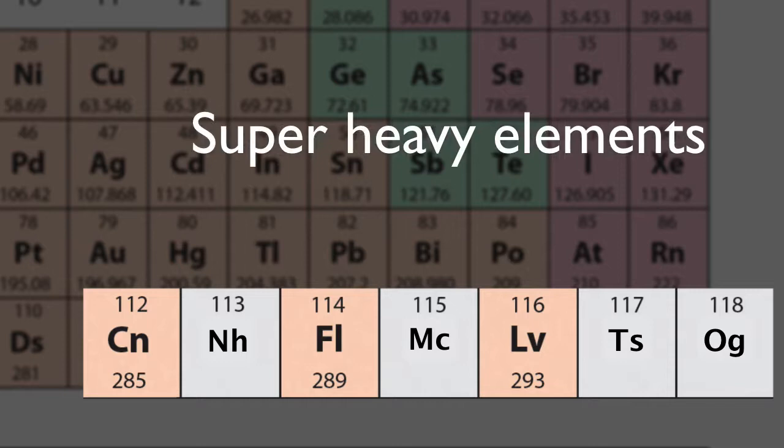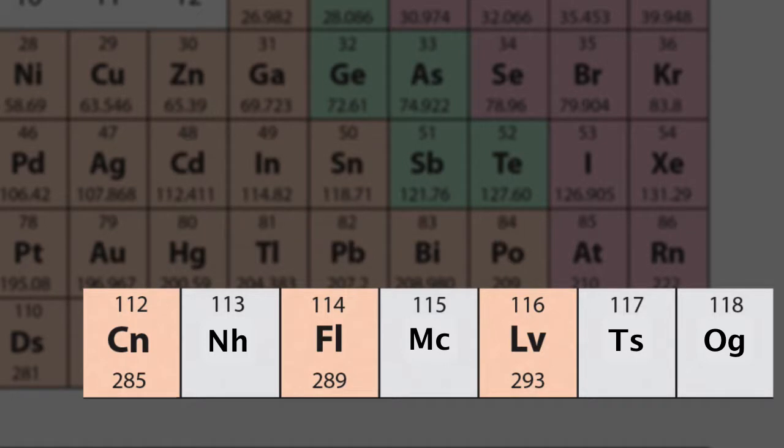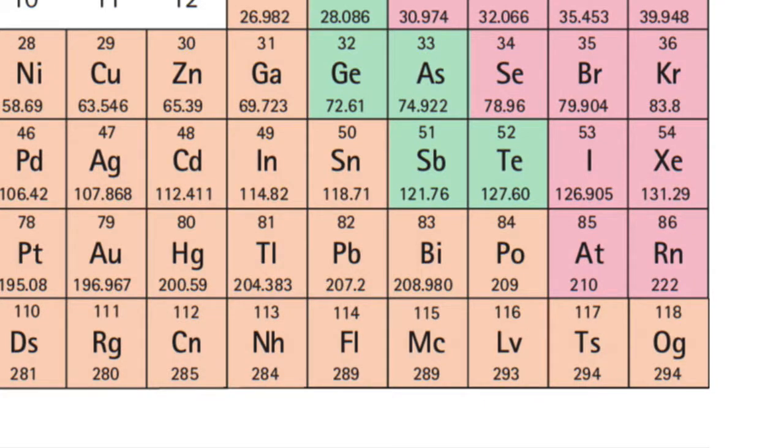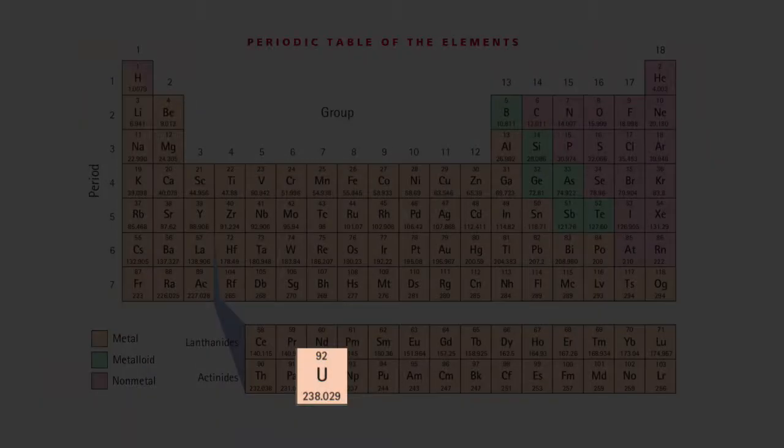As it turns out, these super-heavy elements are so highly unstable that they exist for only a fraction of a second. These are all synthesized in the laboratory. You won't find any of these occurring in nature. The heaviest element that occurs in nature in any appreciable amounts is uranium. Right here, number 92.